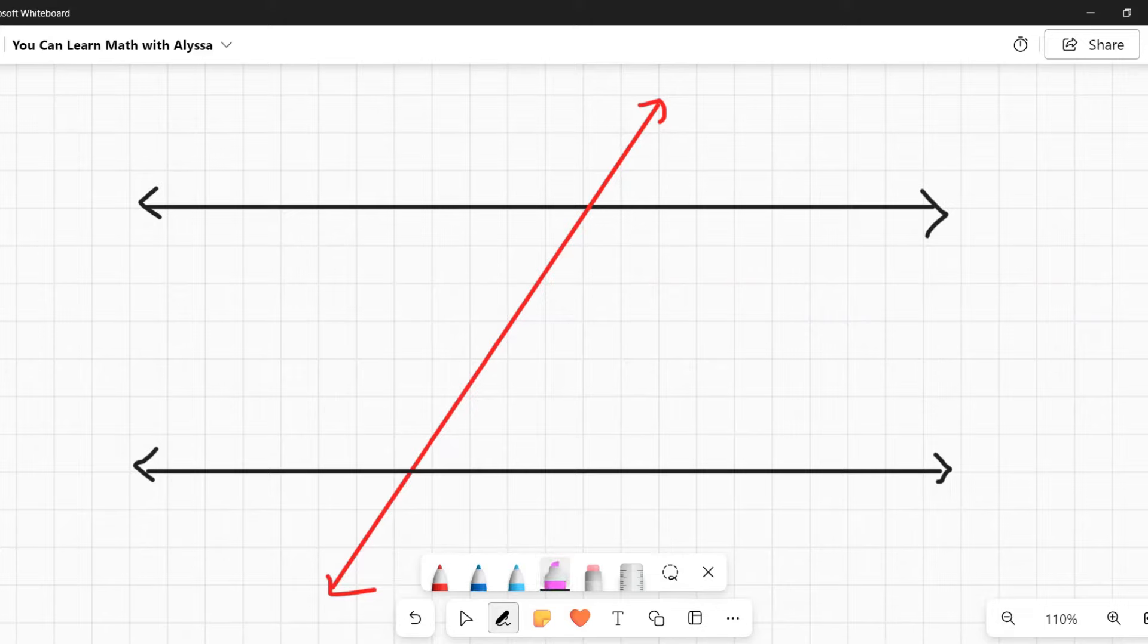When this happens, when this transversal crosses the parallel lines, it creates two intersections. They are most often at angles like this, where you have obtuse and acute angles. The only exception would be if this transversal was straight up and down, in which case you'd have four right angles. More often than not, it's going to be at a slant of some kind.